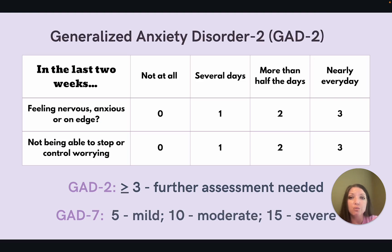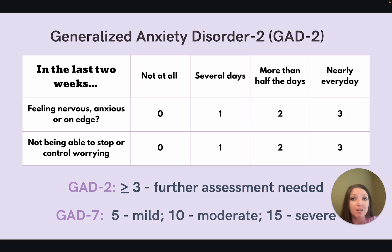So who should we screen for anxiety? The United States Preventive Services Task Force, or the USPSTF, recommends screening all adults ages 18 to 64 for anxiety disorders. A good rule is to screen adults who have never been screened before and consider additional screening for those with risk factors.